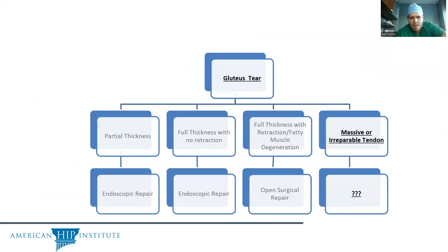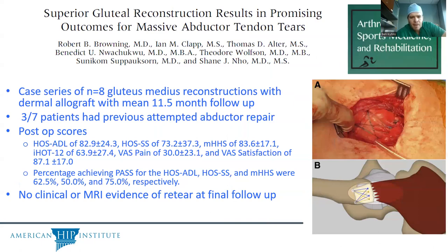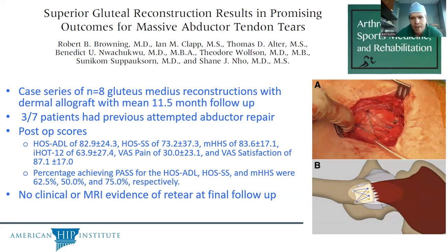For a full thickness retracted tear, we talked about open surgical repair. For a massive or irreparable tendon — where the decision is made intraoperatively that anatomic repair will have too much tension — there is the option of a reconstruction graft. This can be a dermal allograft or any kind of allograft to help bridge the gap between the retracted tendon and its anatomic insertion. It is more of a salvage procedure because it is not native tendon, but it is a good option when there aren't many good alternatives.